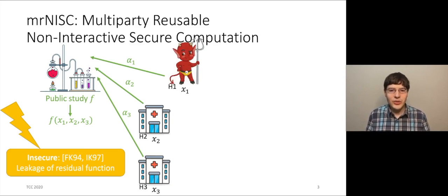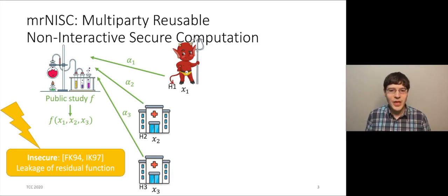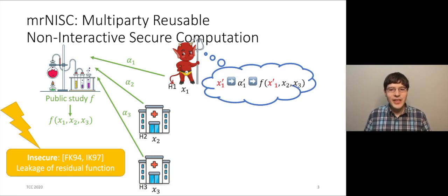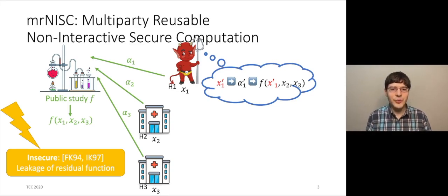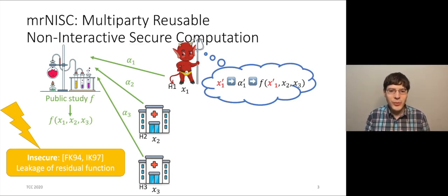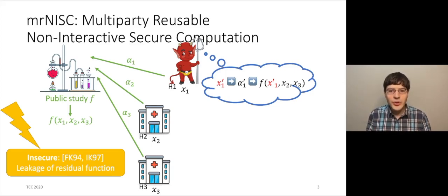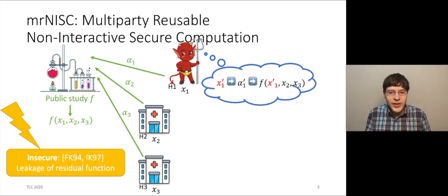What do we mean by that? Suppose that hospital 1 is corrupt. What it can do is participate in the study normally, but then in its head it can consider another input, another database X'1, derive the corresponding computation encoding alpha1, and use the public computation encodings alpha2 and alpha3 to derive the output of function F on X'1, X2, and X3. In other words, a corrupt hospital can compute F on X'1, X2, X3 for any X'1. This is completely insecure. The issue intuitively is that the inputs of the parties are not committed.